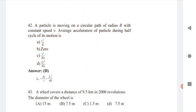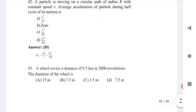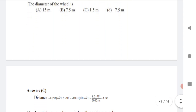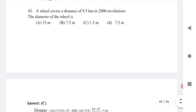Next: a particle moves on a circular path of radius r with constant velocity v. The average acceleration during half of its motion is 2v²/πr. Just remember this formula — it is a simple but important result.